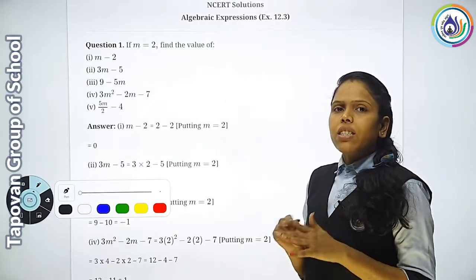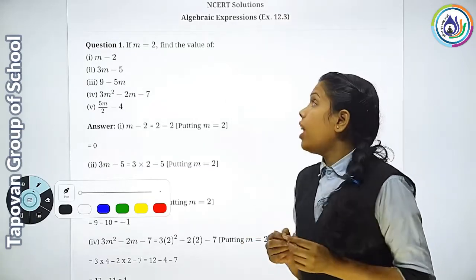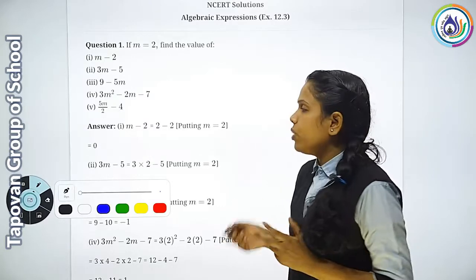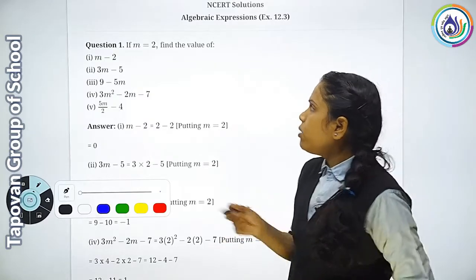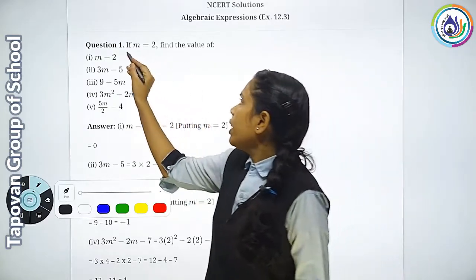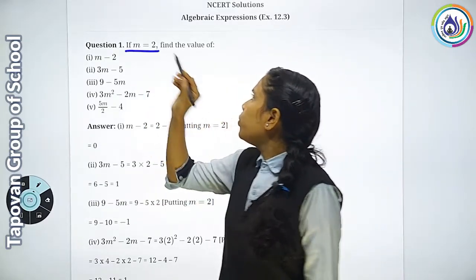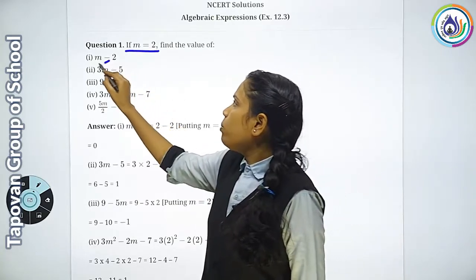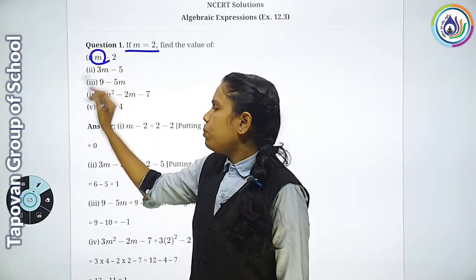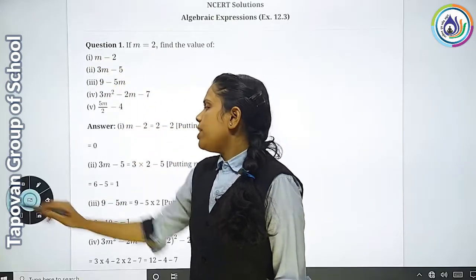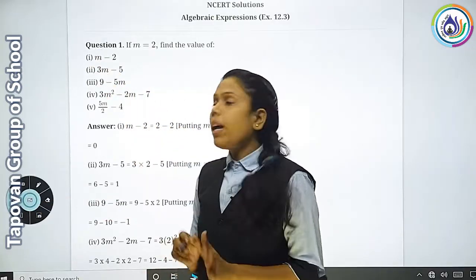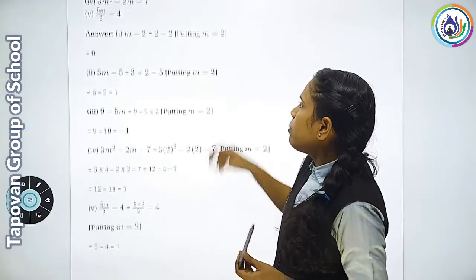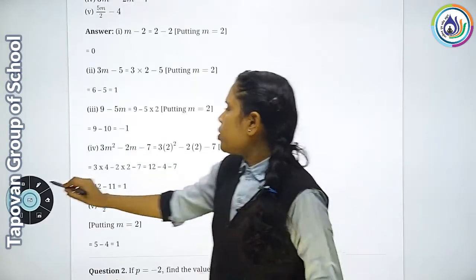हमने last video में Addition-Subtraction देखा। अब हमें उसकी values put करनी सीखनी है। Question No. 1: if m is equal to 2, find the value. तो m की value हमें 2 रखनी है। जहाँ पर भी m दिखे, वहाँ पर m की value रखनी है। First है m-2.